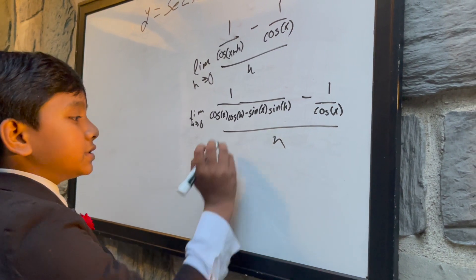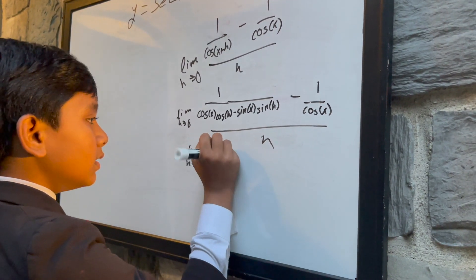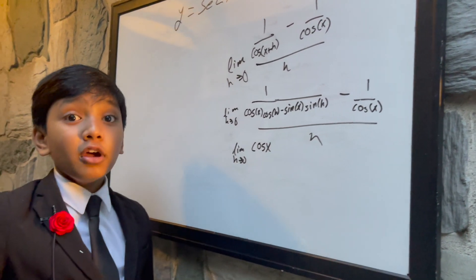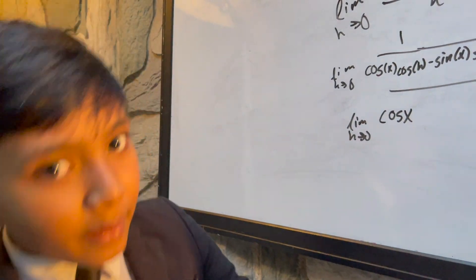So, that gives us cosine of x. Yes, I know. You were excited for me to torture myself by saying cosine x cosine x cosine h minus sine x sine h. Wait, I just said it.